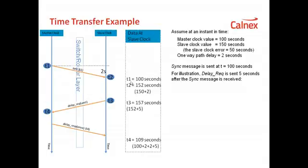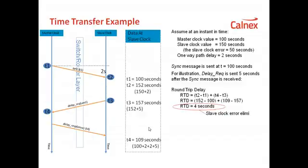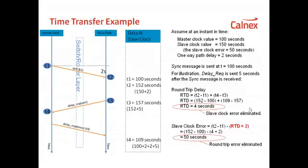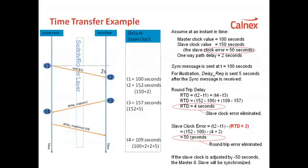At the end of that interaction, the slave has the following data: T1 from the master, T2 which is its own receive timestamp, T3 which is its own transmit time, and T4 which is the return timestamp from the master. When it has all of this information, the slave can calculate the effective round-trip delay, then calculate the one-way delay by dividing the round-trip delay by two, and work out the delay between master and slave. By knowing T1 and the delay it took to reach the slave, the slave can calculate and adjust its own clock to match the master's.